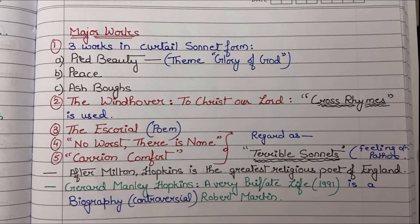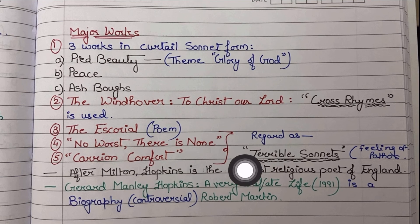Now for major works: three important curtal sonnets are Pied Beauty, Peace, and Ash Boughs. The theme of Pied Beauty is the glory of God and the powerfulness of God's nature. The next major work is The Windhover, subtitled To Christ Our Lord, which uses cross rhymes. Two important poems, No Worst There Is None and Carrion Comfort, are called terrible sonnets — not because they are poorly written, but because they carry a feeling of pathos.